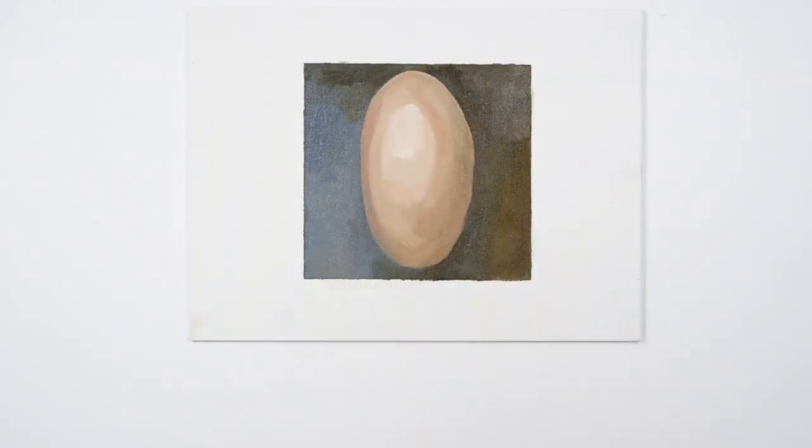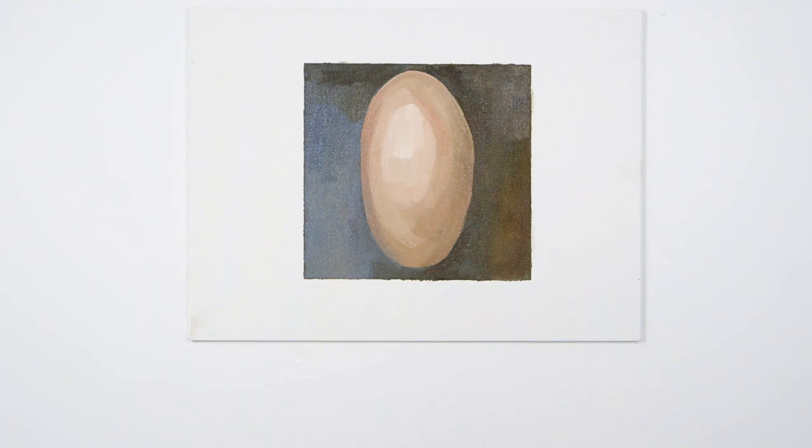Here, where the form transitions into the background, two mixtures of the same tonal value but different hue sit side by side. We could use the term lost edges to describe the effect this has.